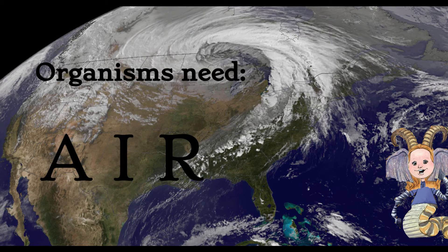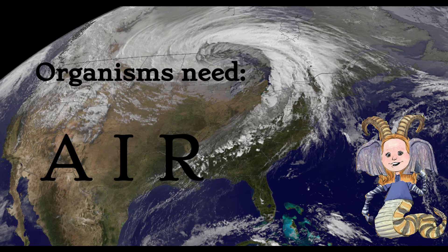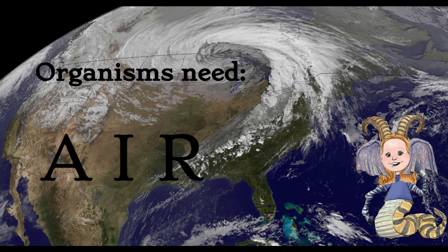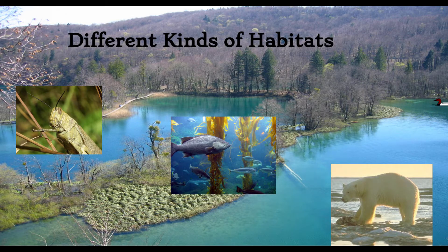Organisms need air — and not just air to breathe, because plants also provide oxygen for us to breathe. Different animals need different habitats. A fish, for example, needs water to live in. A grasshopper needs a big space where it can hop and eat leaves.